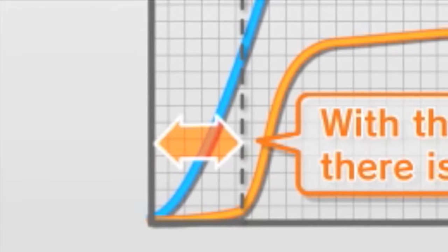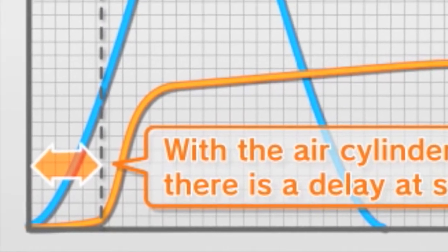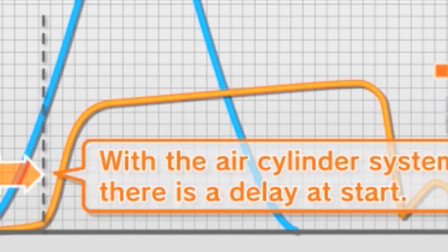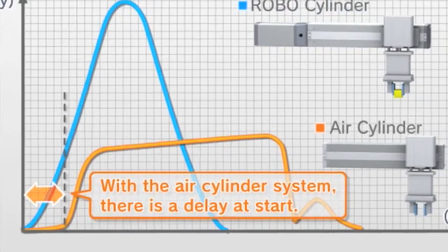This delay corresponds to the time needed for the solenoid valve to open to take in air, and this air to travel through the pipe, enter the air cylinder, and generate the pressure to move the piston.